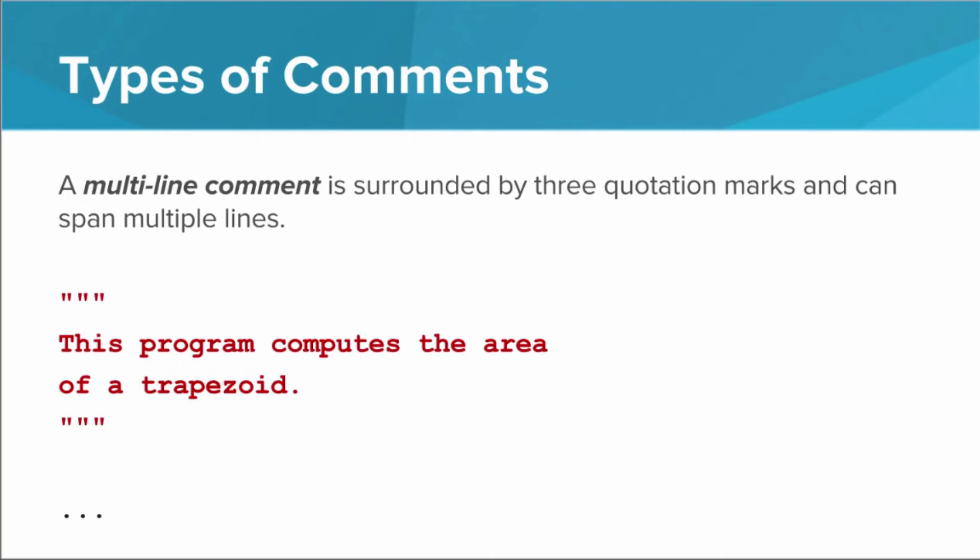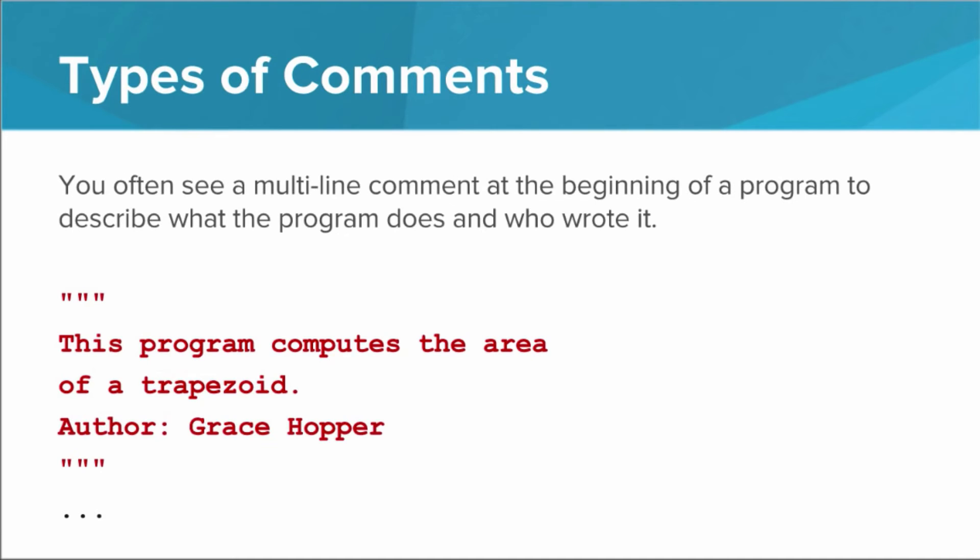The first type is a multi-line comment, so called because it can span multiple lines. When the interpreter sees three free-floating quotation marks in a row, it knows to ignore everything it sees until it sees three more quotation marks. You often see a multi-line comment at the beginning of a program to describe what the program does and who wrote it.